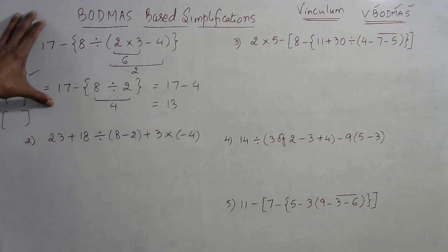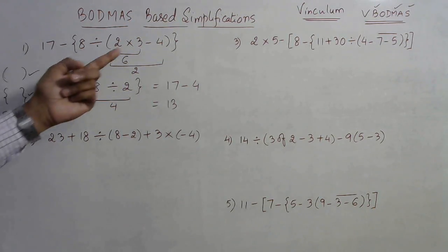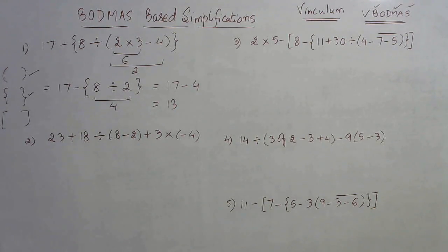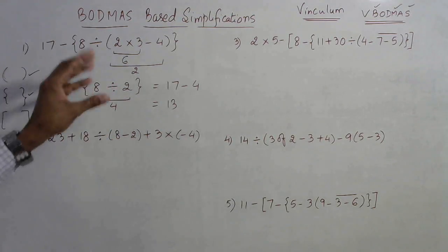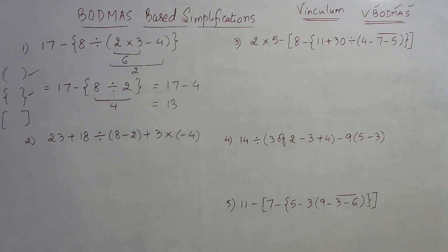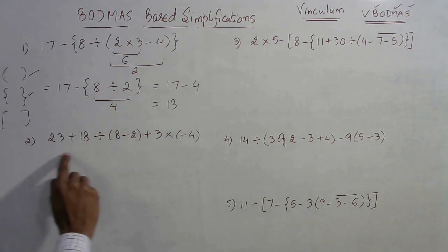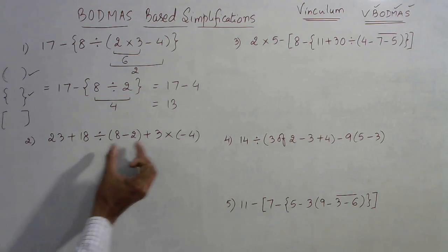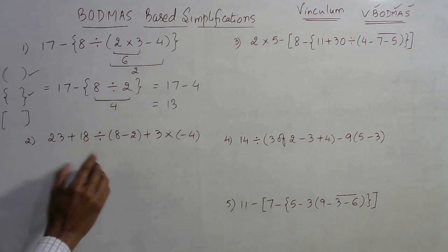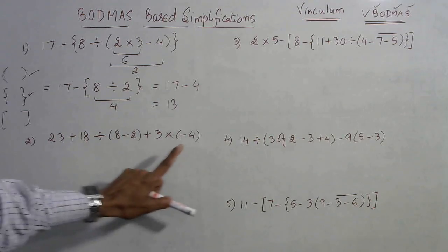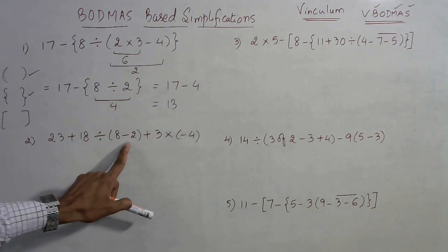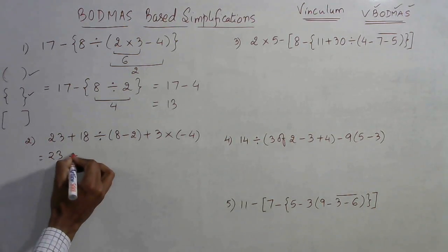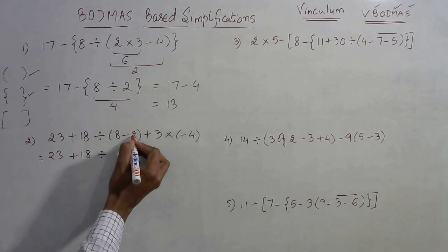Students who have mastered this concept can solve such problems just by looking at them. First write all the steps, then try to solve it by leaving the steps subsequently. In the second question we have two parenthesis brackets. We need to simplify the bracket which contains more than two terms — here one bracket has only one term (minus 4) but the other has two terms, so let us simplify that one first. This comes out to be 23 plus 18 divided by 6, since 8 minus 2 is 6.